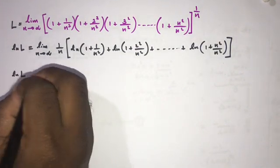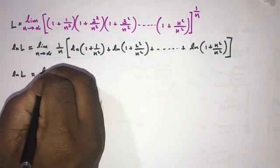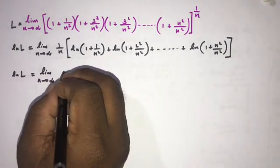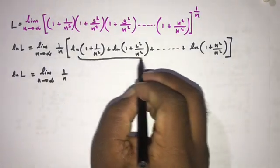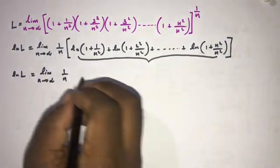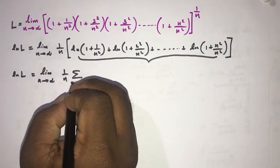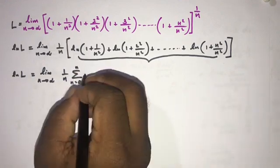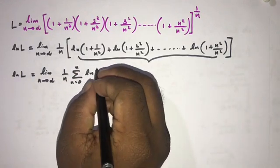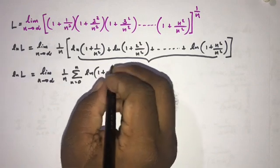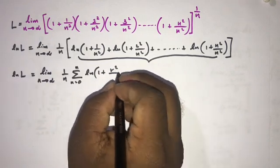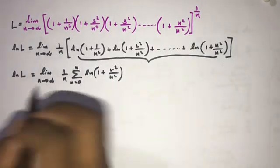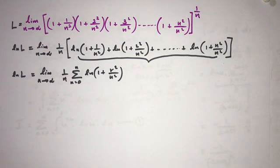So natural log of L is equal to the limit as n goes to infinity of (1/n) times the sum from r = 0 to n of the common term natural log(1 + r²/n²).